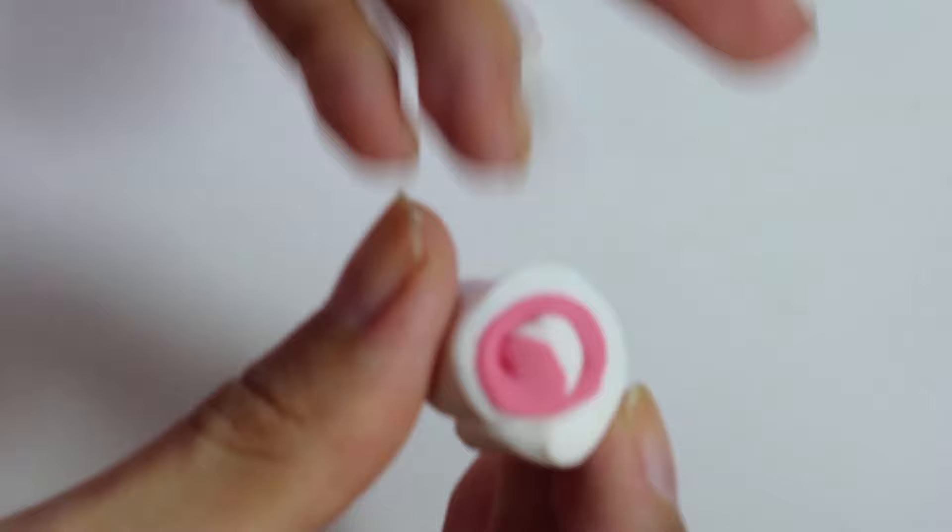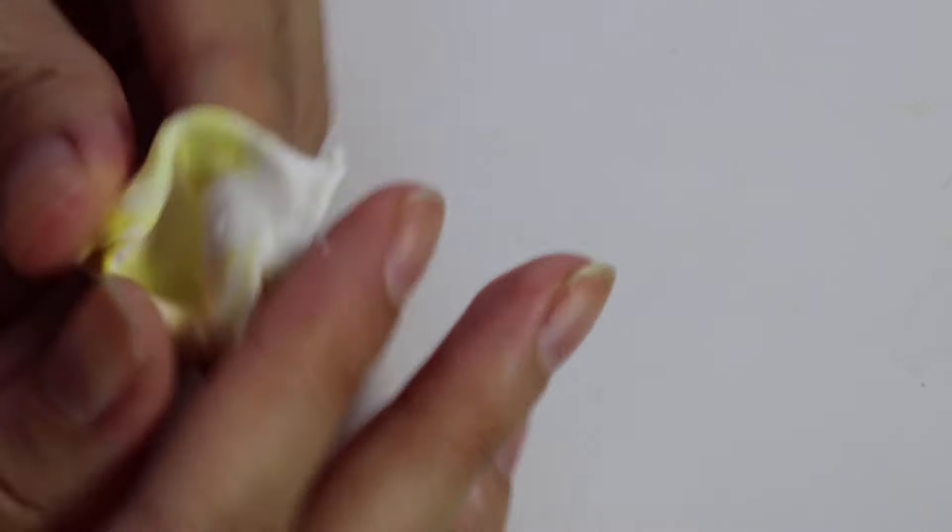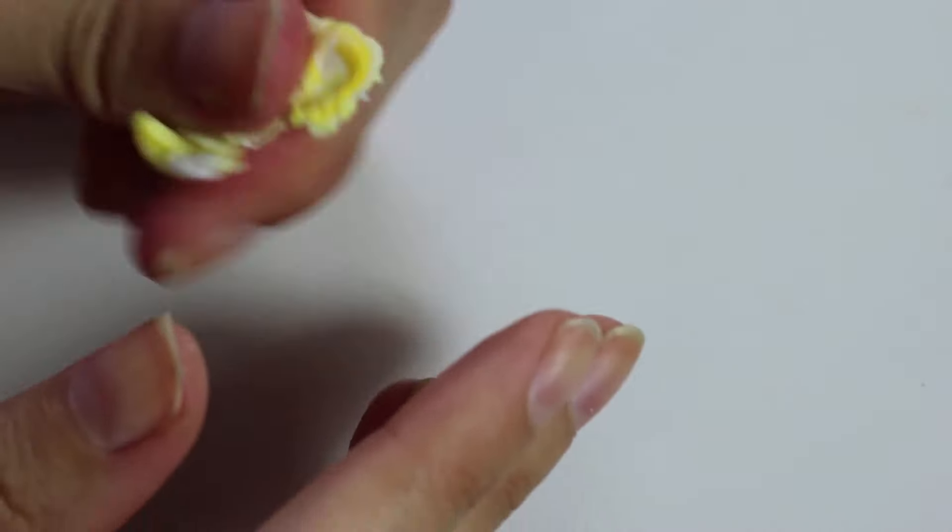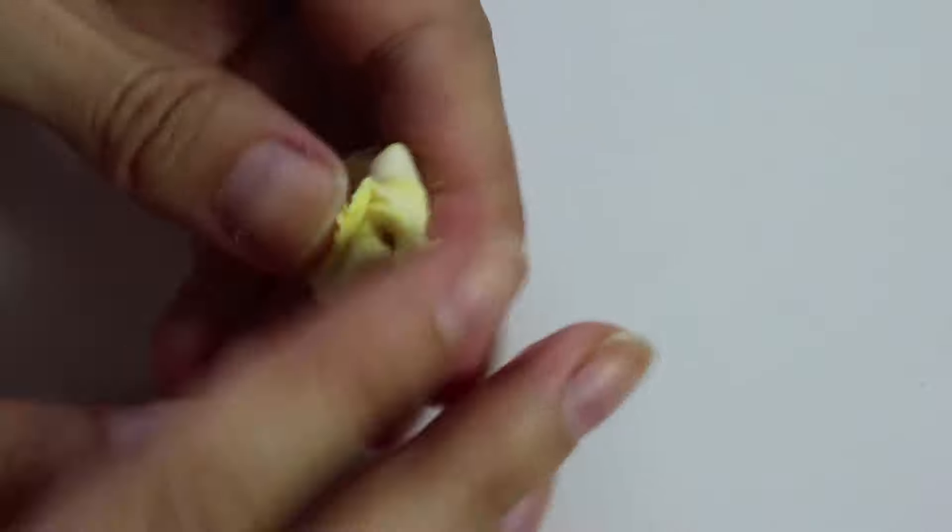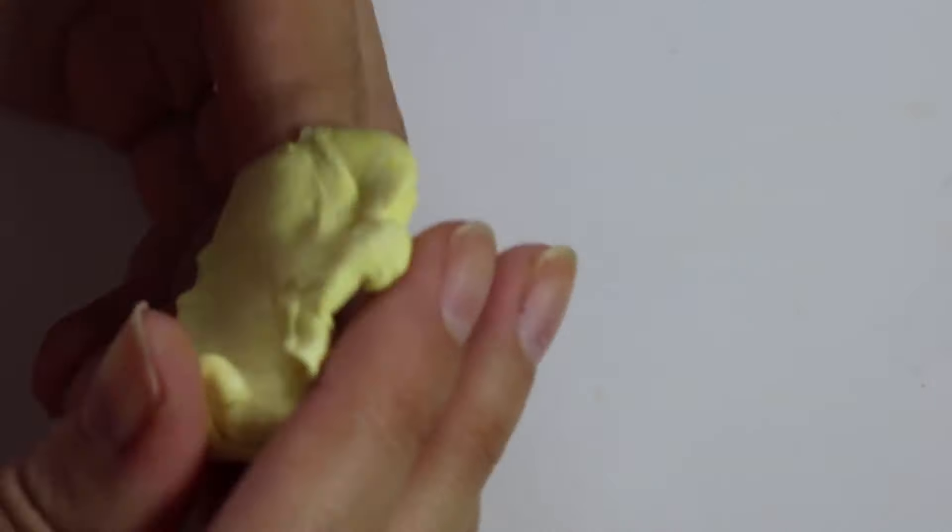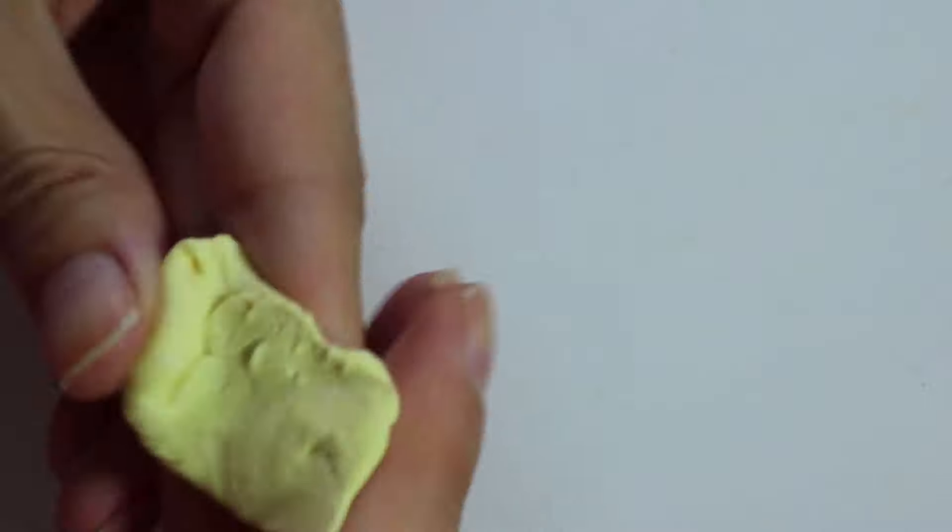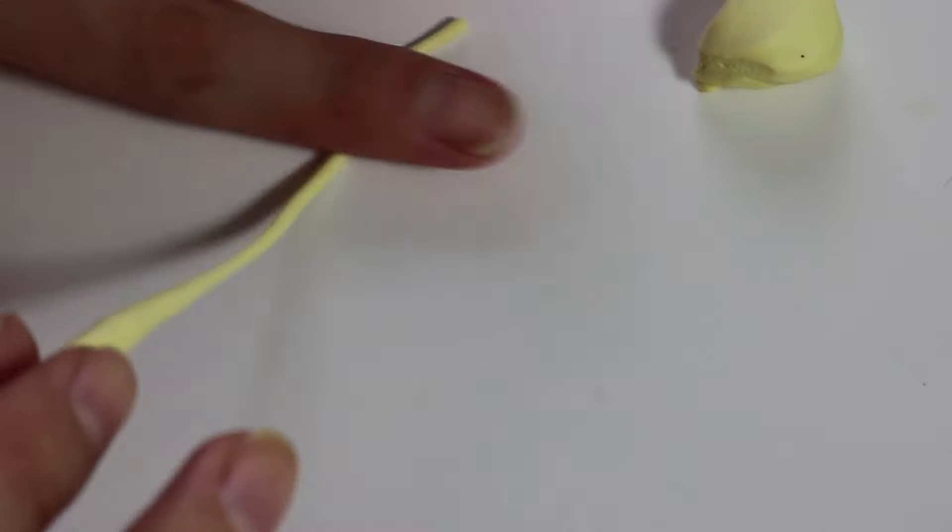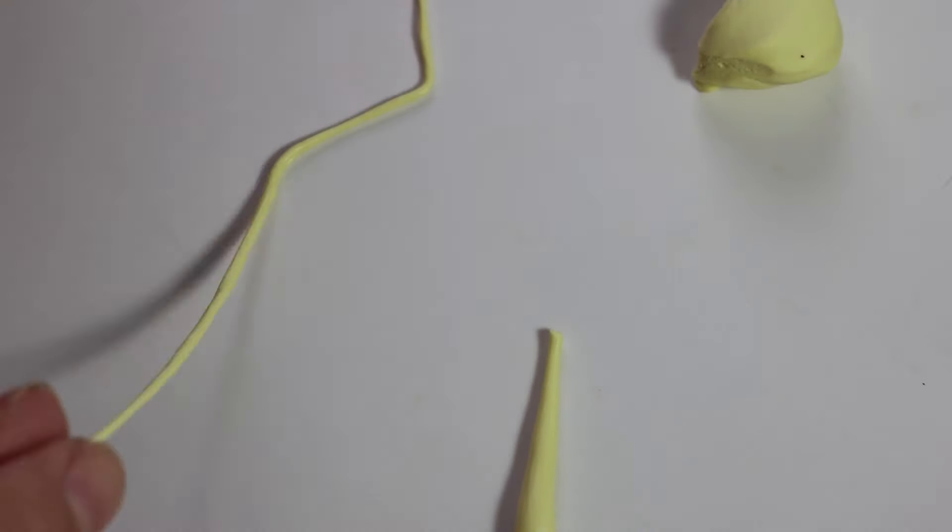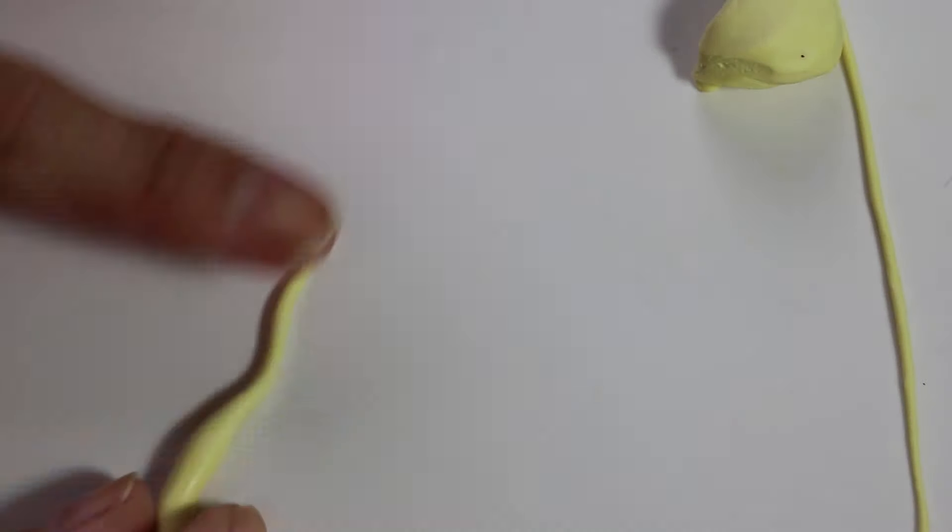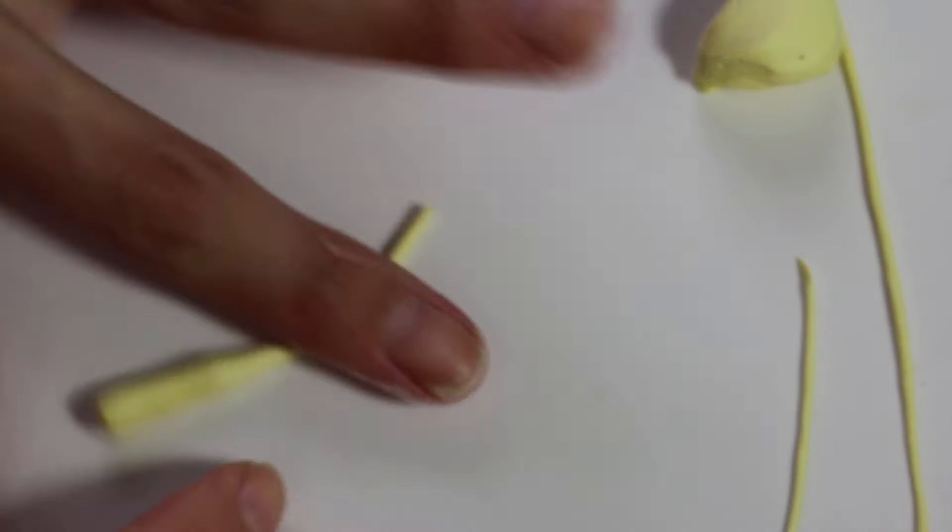So now on to the noodles. You need to have patience for this because you have to make a lot. But anyways, so the color is just a little bit of yellow and white with some translucent and mixing that all up. And then rolling that out. So you want to make really really thin snakes.